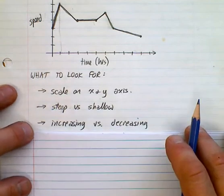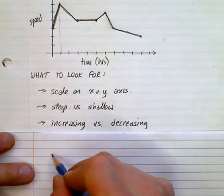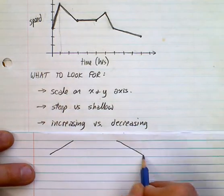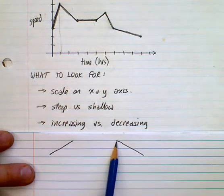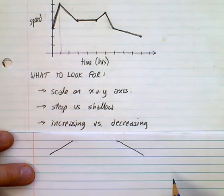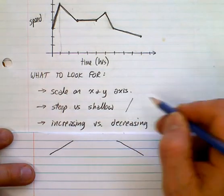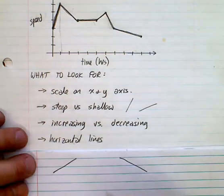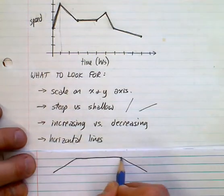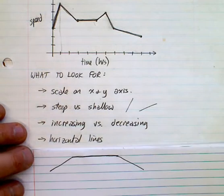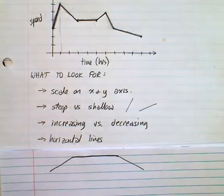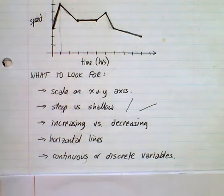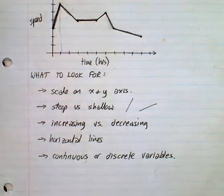Now, is it increasing, which would kind of look like this, an increasing line or a decreasing line? Going up or going down? I think that's pretty obvious. Difference between steep and shallow as well. And then horizontal lines. Horizontal lines. How do those affect my function and how does that look, a horizontal line?